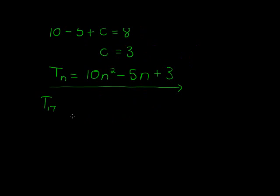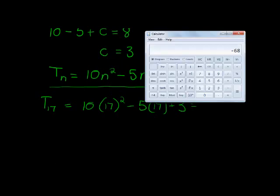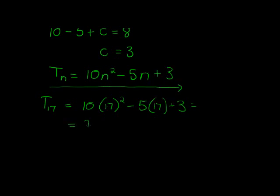To find term 17, say no problem: 10 times 17 squared minus 5 times 17 plus 3. I'm a bit lazy, it's a Friday afternoon, so I'm going to use the calculator. So 17 squared times 10 minus 5 times 17 plus 3 is equal to 2808.